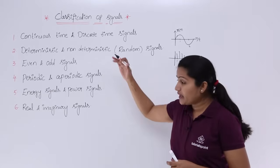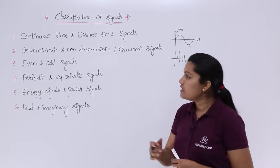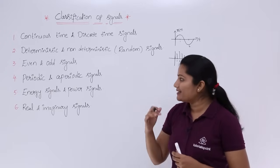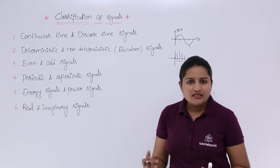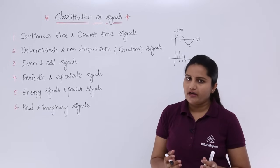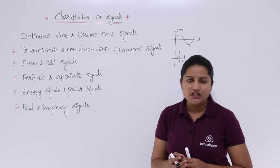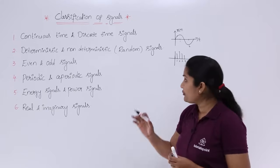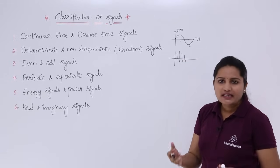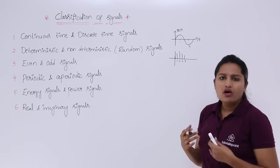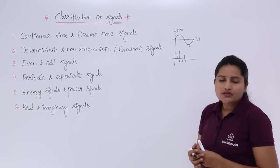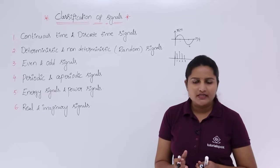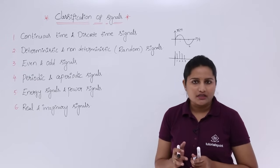In the next classes we will discuss each classification one by one with examples. The second classification is deterministic and non-deterministic. Simply, deterministic means if you can define a signal using a mathematical equation. For example, if you have a signal, you can say x of t = sin(t) or cos(t) — if we can represent it with a mathematical equation, it is said to be deterministic.